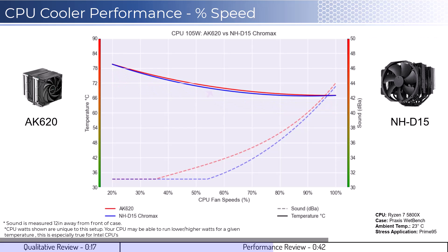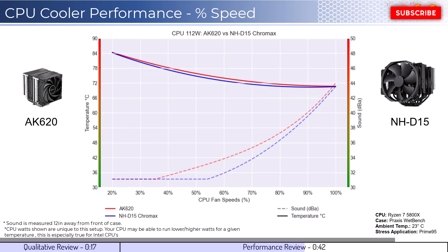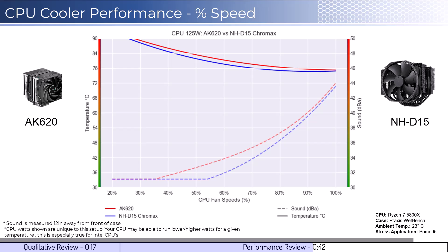As we increase the watts to 105, which is what the CPU is rated for, we can see that the performance between the coolers is very similar. However, the NH-D15 is materially quieter under 80% fan speed, but they have similar noise levels at higher RPMs. Next, we will look at the CPU overclocked to 125 watts. This shows that both coolers can handle overclock temperatures well, with the Noctua NH-D15 being slightly cooler.